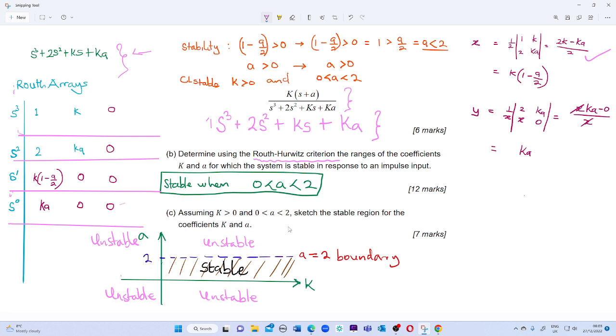So that gives us k times (1 minus a) over 2. This gives us the next input to the column. Now how do we find the next column, which is column 0? We use the same way, finding the determinant of the input in the column and the rows.